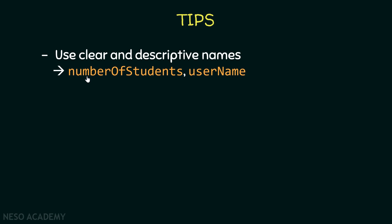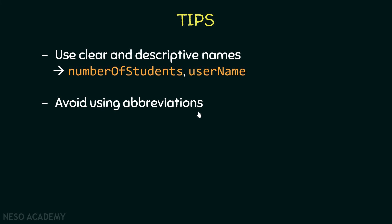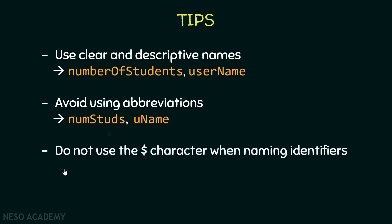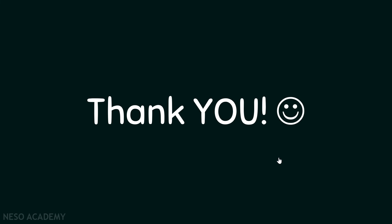Now let's look at some tips. Always use clear and descriptive names — for example, if you want a variable to store the number of students, call it numberOfStudents and use the camelCase convention. If you want a variable to store the username, call it userName. Avoid abbreviations like numStuds or uName — this makes your program hard to read. Finally, avoid using the dollar sign when naming identifiers; it's technically allowed but not recommended.